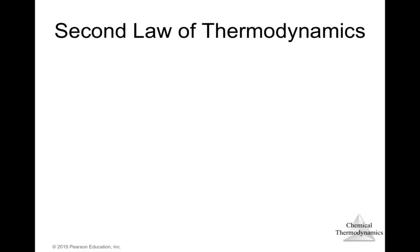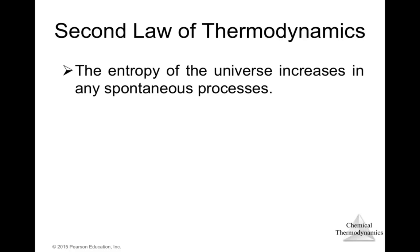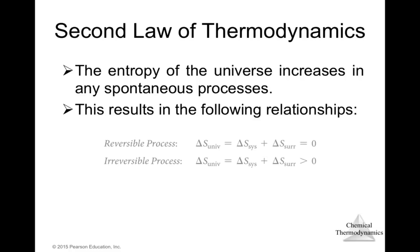The second law of thermodynamics states that the entropy of the universe increases in any spontaneous process. This gives the following relationships: for a reversible process, delta S of the universe equals delta S of the system plus delta S of the surroundings, and this equals zero. For an irreversible (spontaneous) process, delta S of the universe is greater than zero and equals the sum of the entropy changes of the system and surroundings.